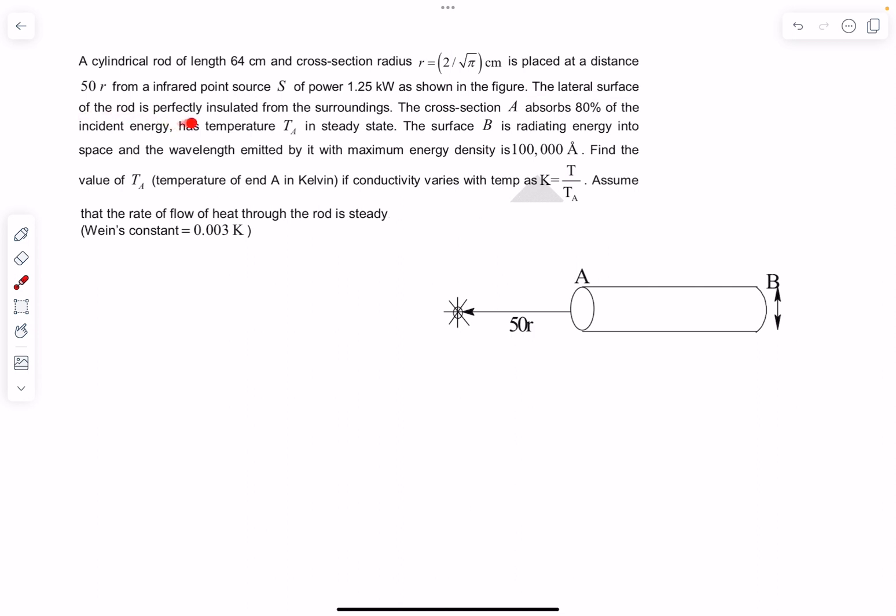The lateral surface of the rod is perfectly insulated from the surrounding. Basically there is no heat transfer through the lateral surface. So the only heat transfer through the rod is because of conduction along the length of the conductor.